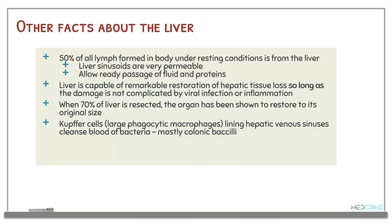Other important facts about the liver: 50% of all the lymph formed in the body under resting conditions originates from the liver, because the liver sinusoids are very permeable and allow ready passage of fluid and proteins. The liver is capable of remarkably restoring hepatic tissue loss, as long as the damage is not complicated by viral infection or inflammation — if 70% of the liver is resected, the organ can restore its normal size. The Kupffer cells, large phagocytic macrophages lining the hepatic venous sinuses, cleanse blood of bacteria, most commonly colonic bacilli.